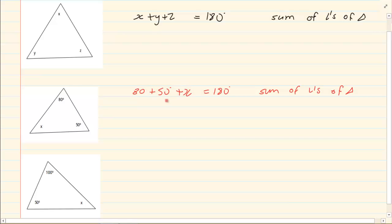That means now I can solve and x is equal to 180 minus 50 minus 80. So x is equal to 180 degrees minus 50 minus 80 giving me x is equal to 50 degrees.